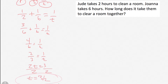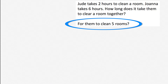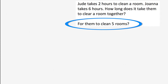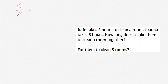All right, that's the answer. Now, what if they are doing five rooms? What you can do is simply take the three-halves that it takes them to do one room and multiply it by five. So that would be 15 halves, or seven-and-one-half.